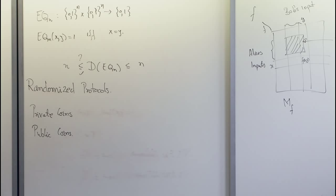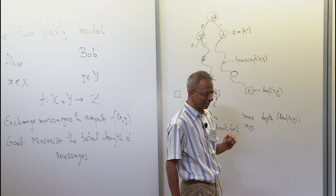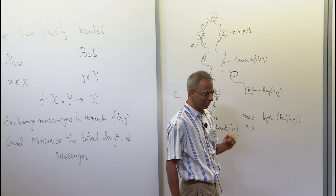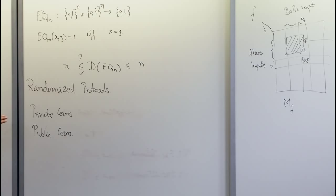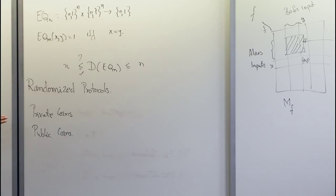Now there's Alice and Bob with the same inputs — we're still talking about the equality problem — and they're allowed to toss coins. There are two models we'll discuss for randomized communication complexity. One of them is private coins, and the other is public coins.